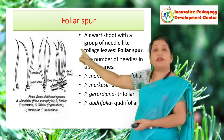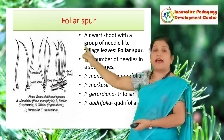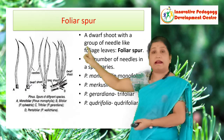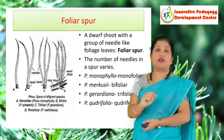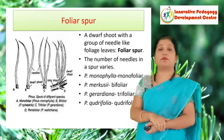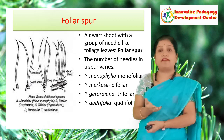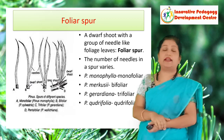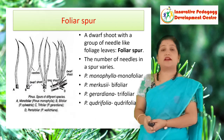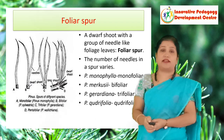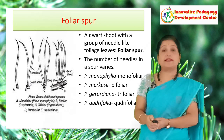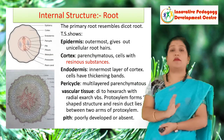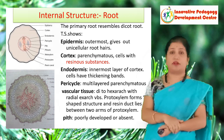The number of needles in a spur varies. For example, there may be a single needle — monofoliar — found in Pinus monophylla; it may be bifoliar with two needles, trifoliar with three needles, and likewise quadri- or pentafoliar needles in a spur, that is the foliar spur. So this was all about the morphology of the Pinus plant.